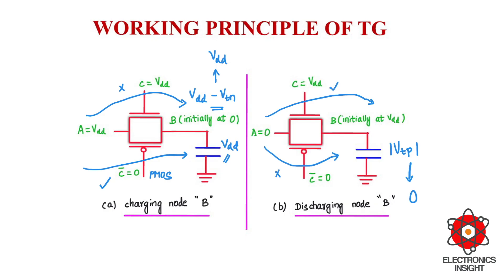With a parallel combination of both NMOS and PMOS pass transistors in the transmission gate design, it is possible to transmit both strong one and strong zero. The strong zero here denotes that the charge which was previously stored all the way up to VDD has been discharged to zero — which is why we differentiate both charging node B and discharging node B.